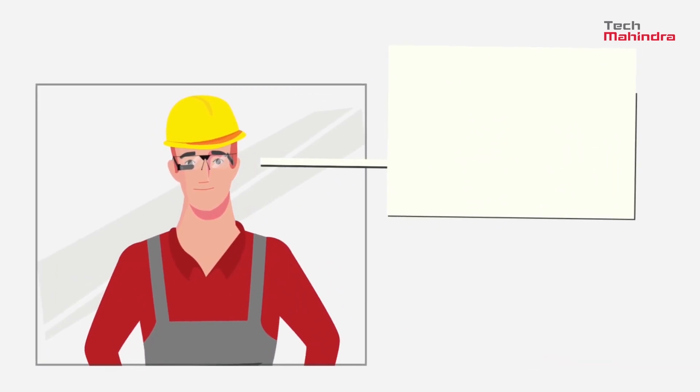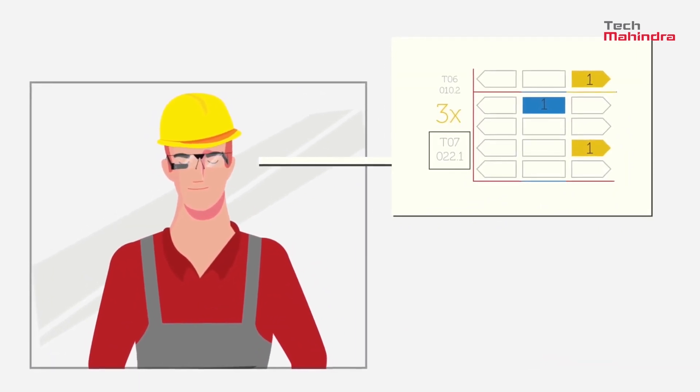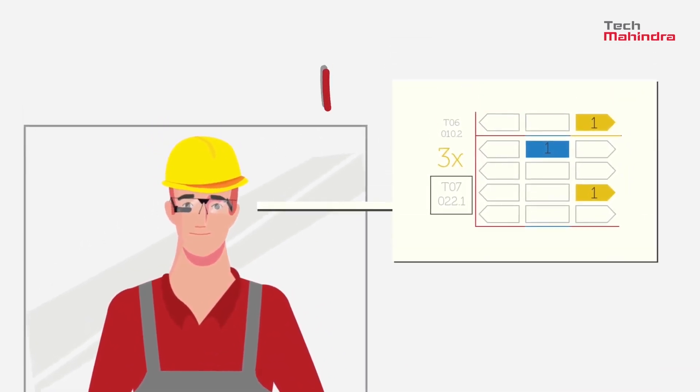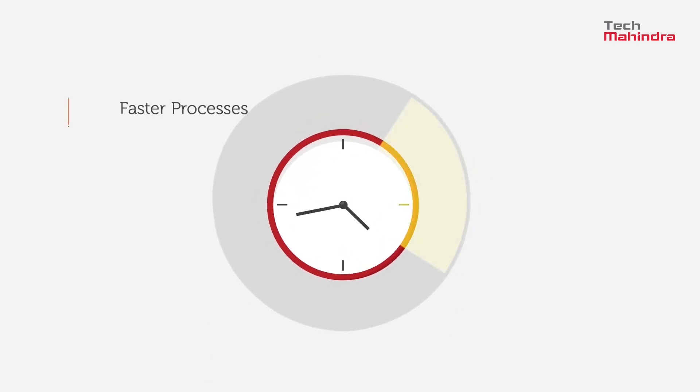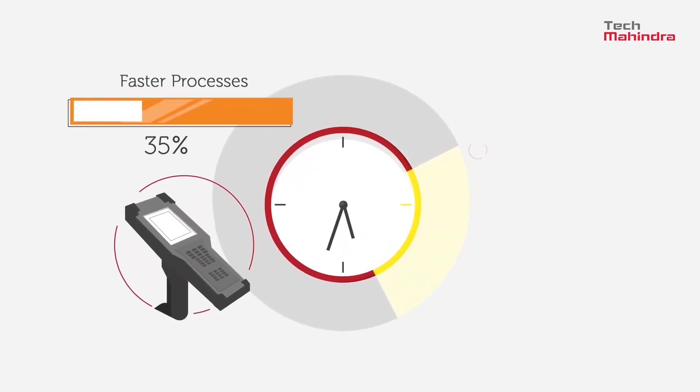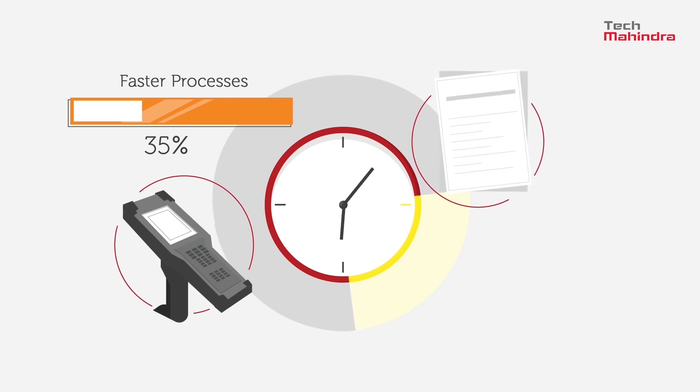The graphical visualization lets workers consume the information within fractions of seconds. The process speed is increased by up to 35%, especially compared to RF guns and paper lists.